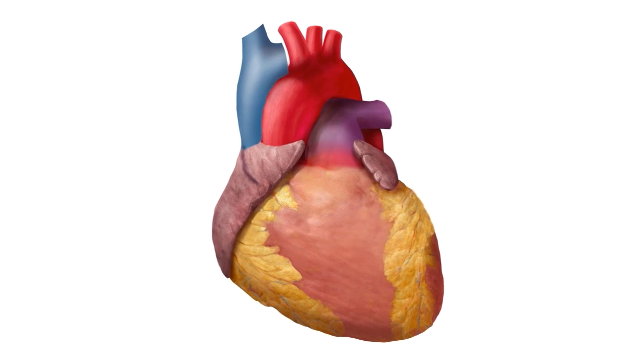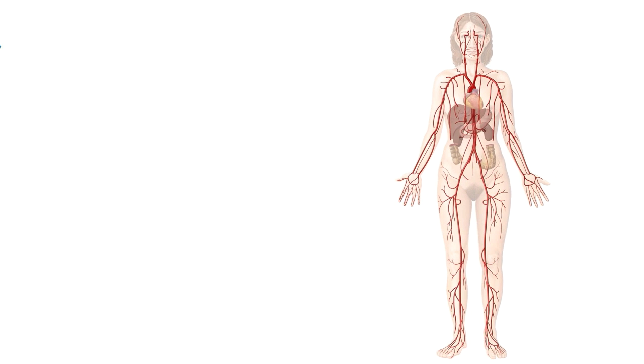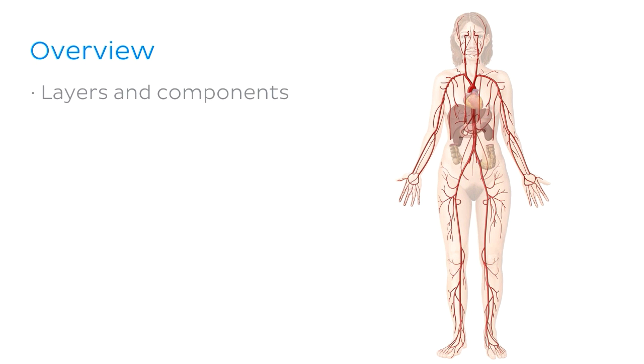So let's have a look at the cellular architecture of the heart that makes all this possible. It's time to study the histology of the heart. In today's tutorial, we'll be looking at the layers and components of the heart at a microscopic level. So let's see what this resilient organ is really made of.